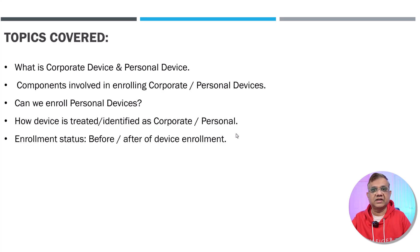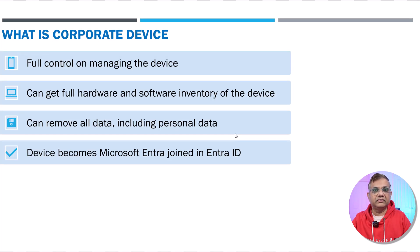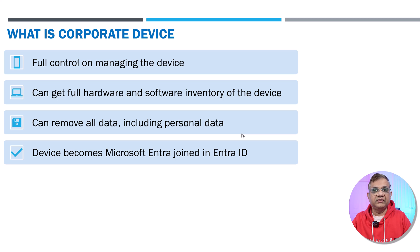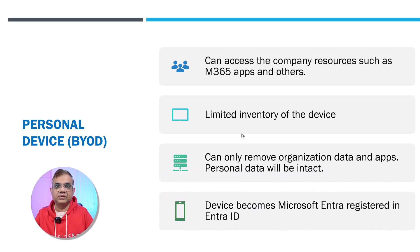Let's continue. What is a corporate device? As the name implies, it's a device where you have full control, as it belongs to the corporate. You can have full control of the inventory — what hardware and software is installed. You can remove all data, including personal data. Corporate devices are meant to be joined to Microsoft Entra, so the 'join' word is important. These are Microsoft Entra joined devices, or if hybrid, Microsoft Entra hybrid joined.